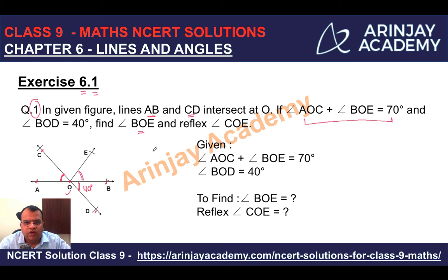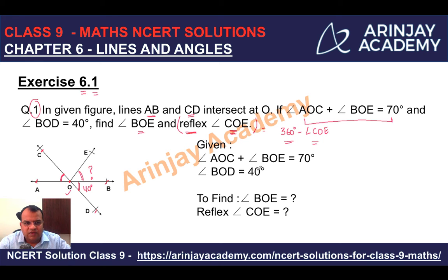We need to find angle BOE and reflex angle COE. You have to find the measure of this angle and what the reflex angle COE is. The reflex angle COE will be 360 degrees minus the value of angle COE. So first, what we need to find out is the value of angle BOE. You are given that angle AOC plus BOE equals 70 degrees, and BOD equals 40 degrees.